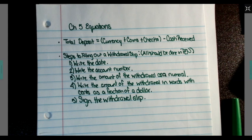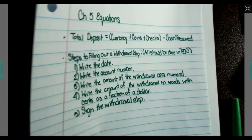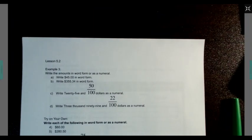Let's go ahead and get started on example 3. Lesson 5.2, example 3. First part of this says, write the amounts in either word form or as a numeral, depending on which way you're given. So here, for A, it says, write $45.00 in word form.